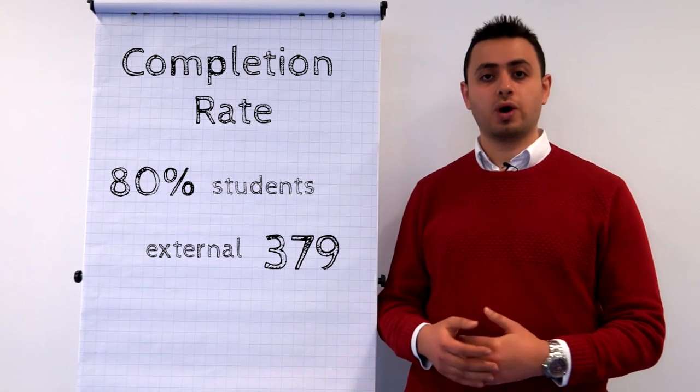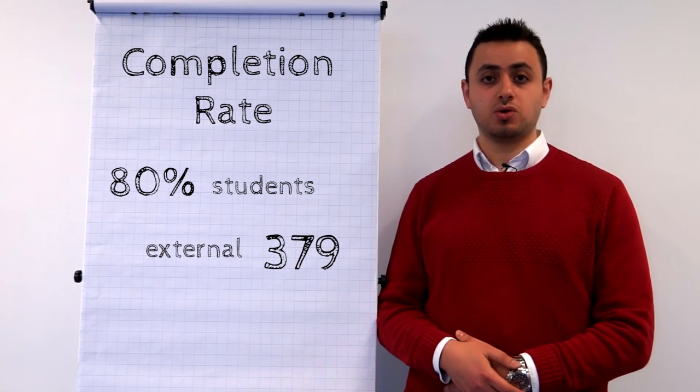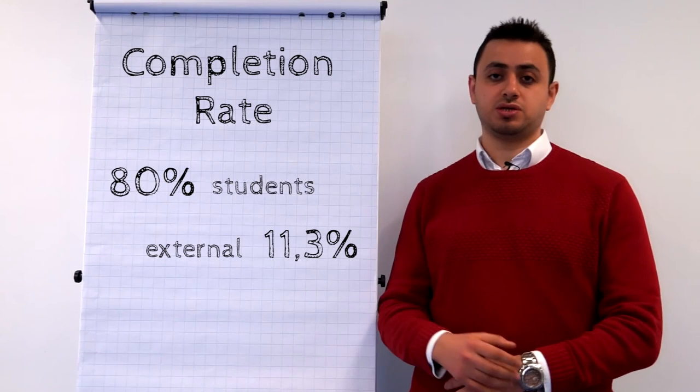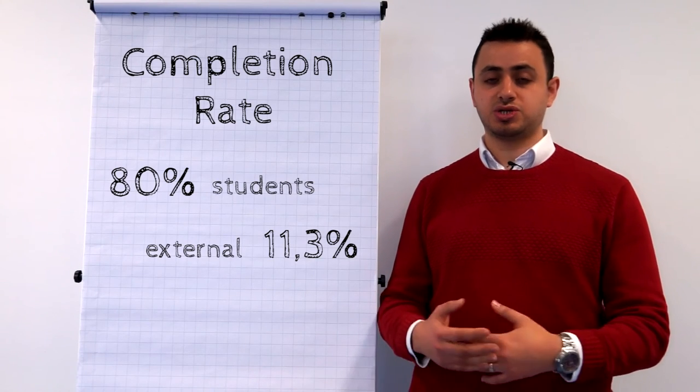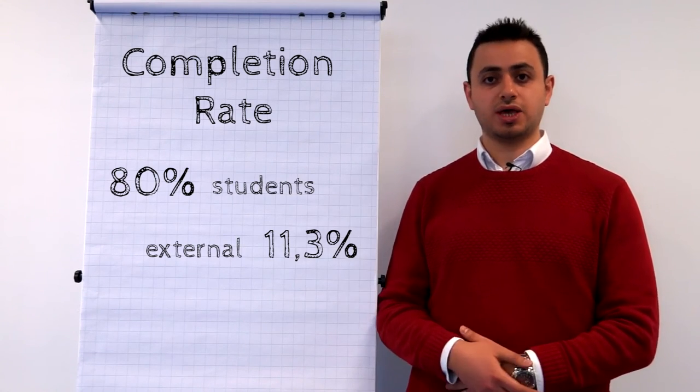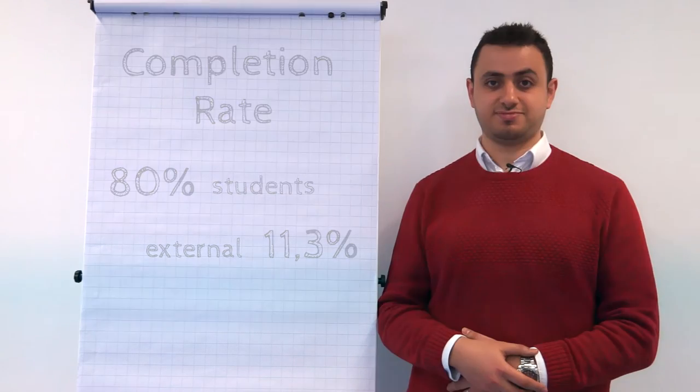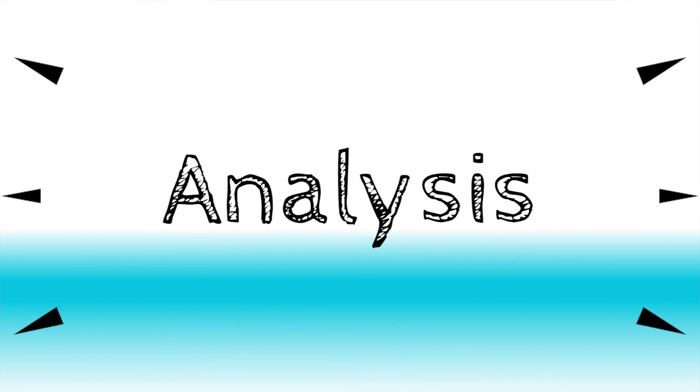The completion rate for the university students was 80%, while for the external students it was 11.3%. And this can be explained because university students have to do this course, while the low percentage of the external students is also okay and it is above the average, which is around 6%.